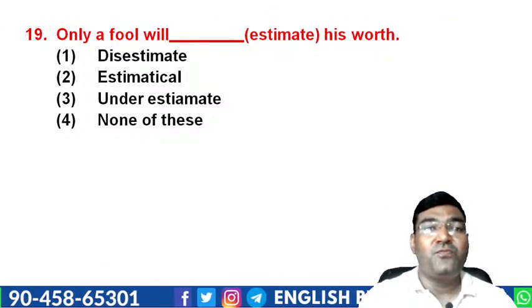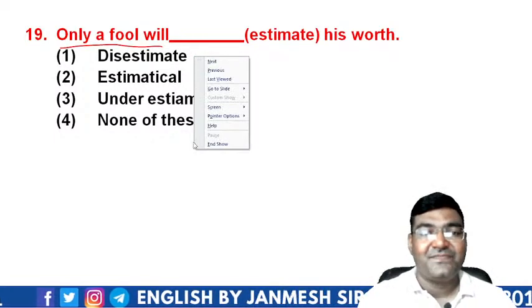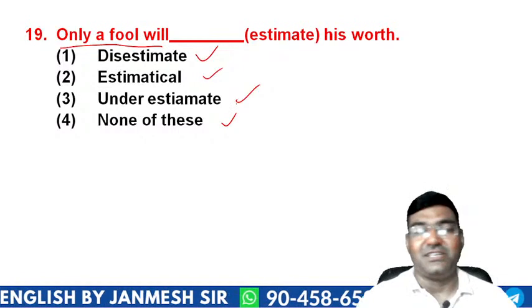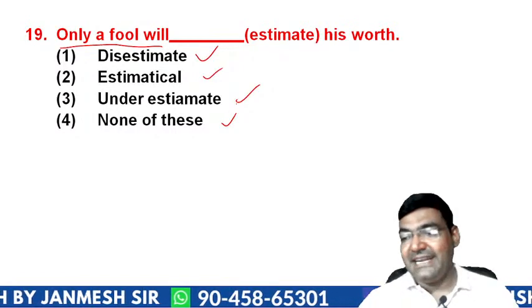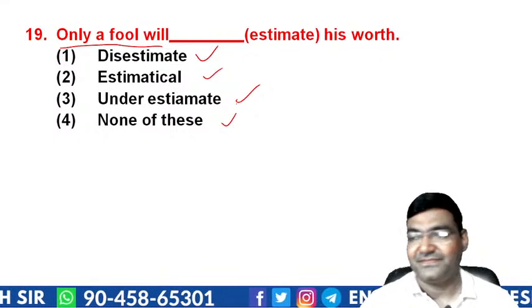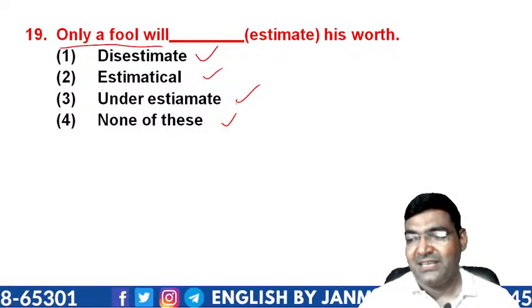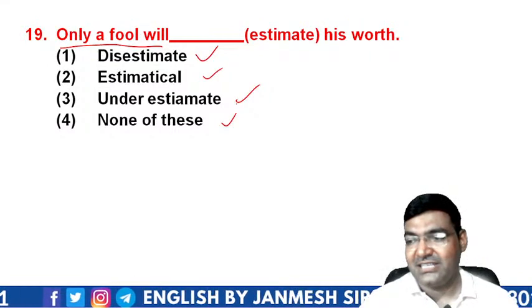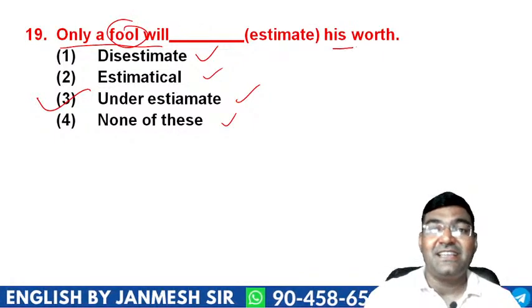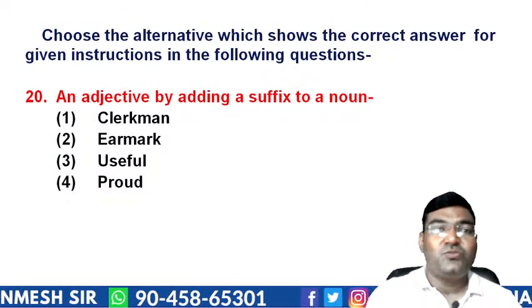Question 19: 'Only a fool will _____ his own worth.' Options are 'disestimate', 'estimatical', 'underestimate', or 'none of these'. Only a fool will underestimate — meaning they undervalue their own abilities, worth, or capacity. The answer is option 3 — 'underestimate'. Most students answered correctly.